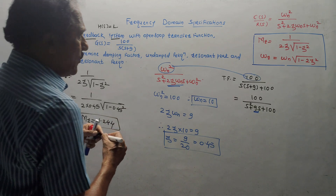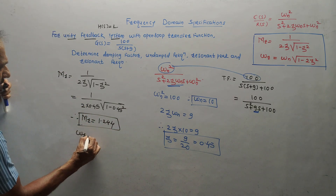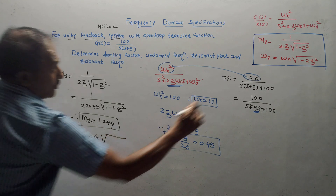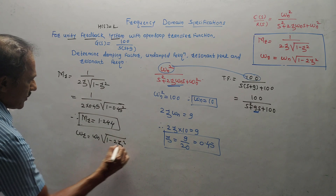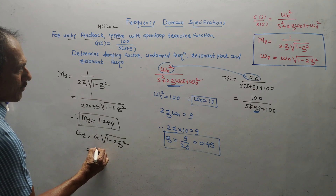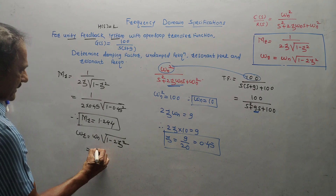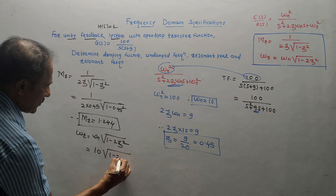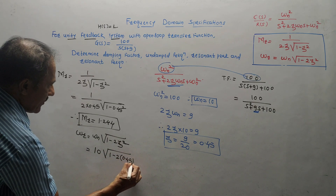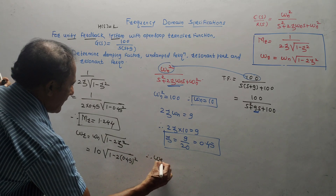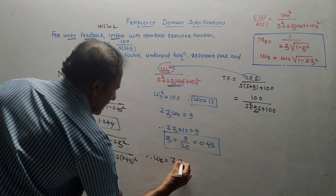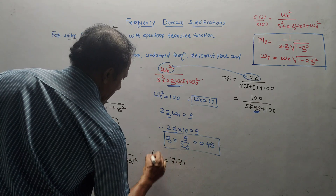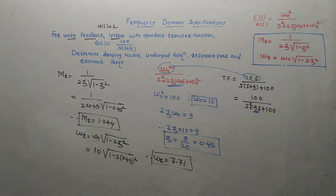Now calculate omega r. Using the formula ωr = ωn√(1 − 2ζ²), with ωn = 10 and ζ = 0.45: ωr = 10 × √(1 − 2 × 0.45²). Therefore ωr equals 7.71 radians per second. This is the value of the resonant frequency.